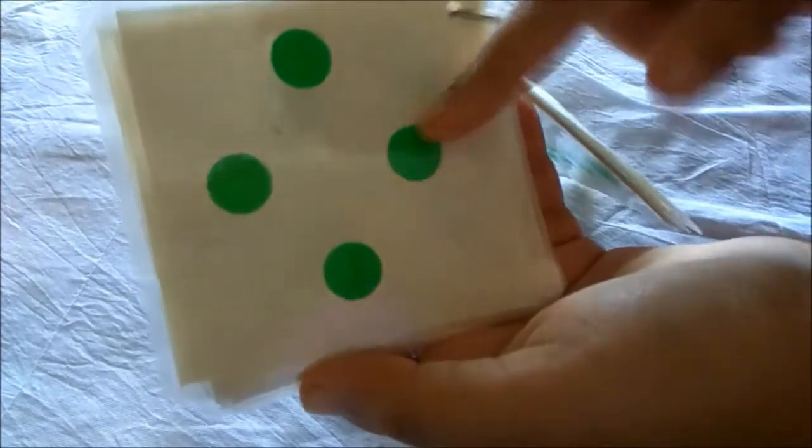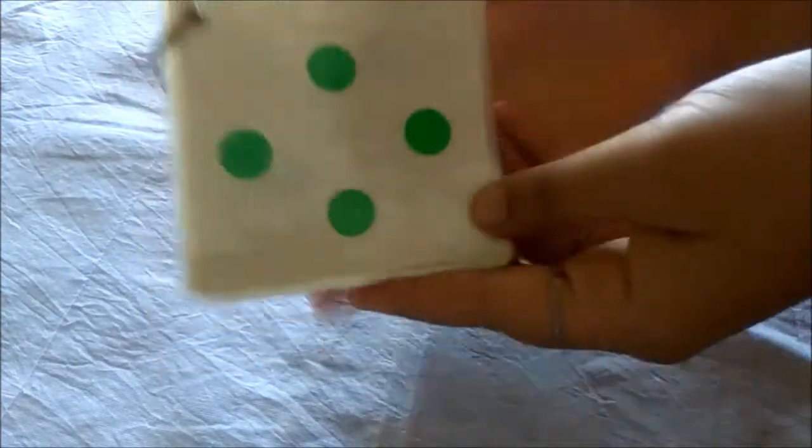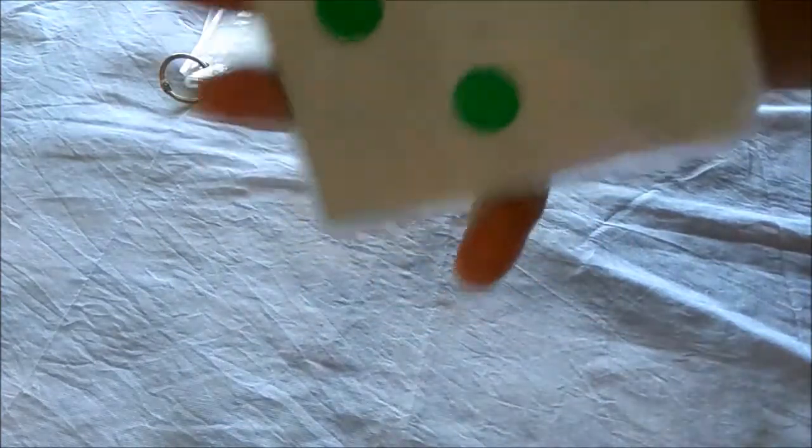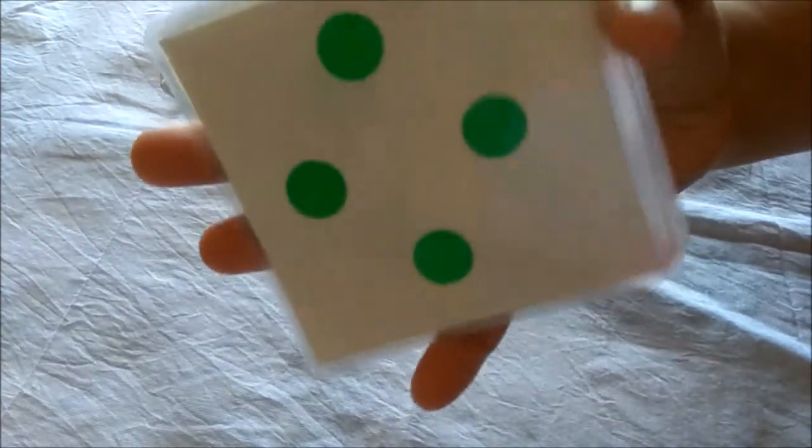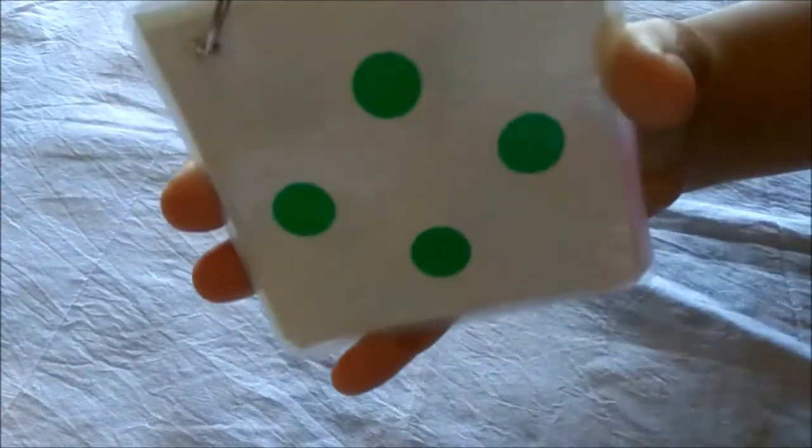Then this is the number 4. So when a child learns the subitizing concept, he understands to see the numbers that these objects represent. In this card, if I hold it like this, this card represents a number 4.